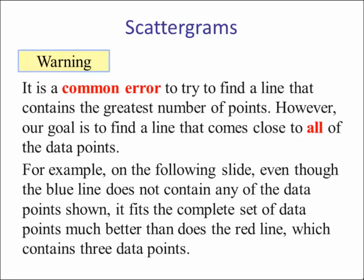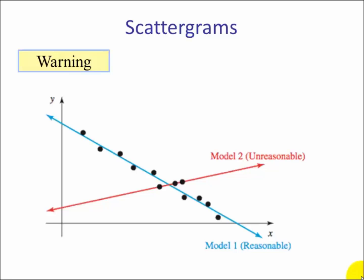For example, on the following slide, even though the blue line does not contain any of the data points shown, it fits the complete set of data points much better than the red line, which contains three data points. So here's the visual. The blue line is a reasonable model for this data even though it does not contain any of the actual data points. The red line contains three actual data points but it is an unreasonable model.